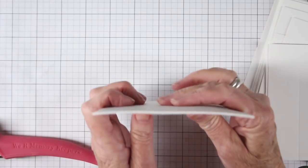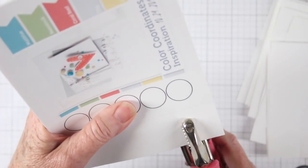To save a little time I'll be punching about three or four sheets of paper at a time. The Crop-A-Dial is super strong and it's really easy to punch through several layers.